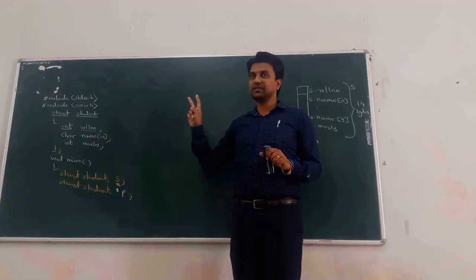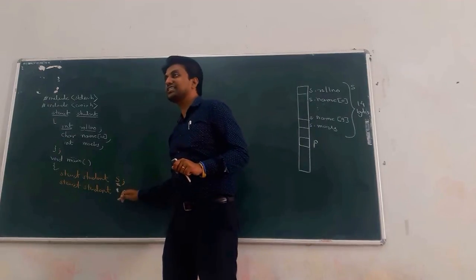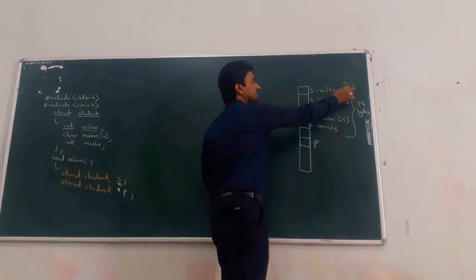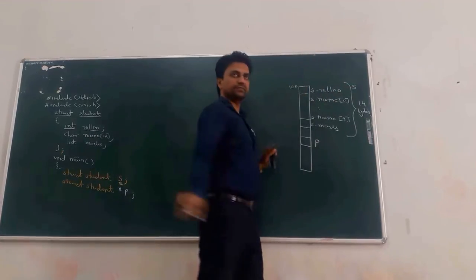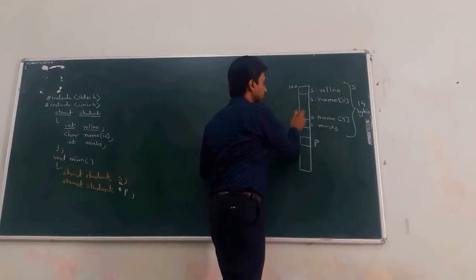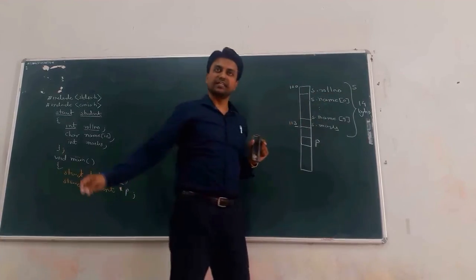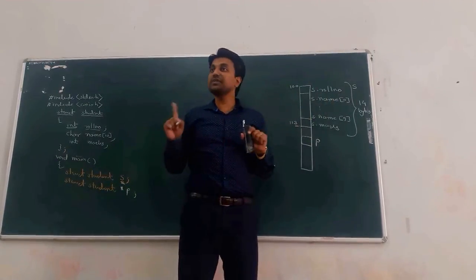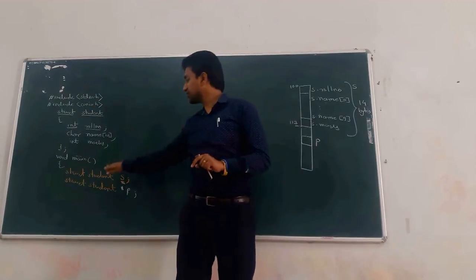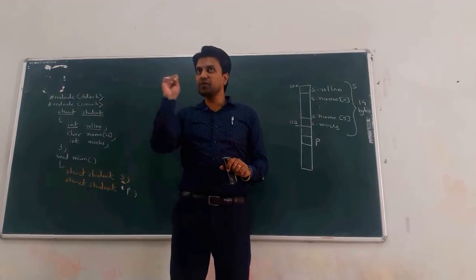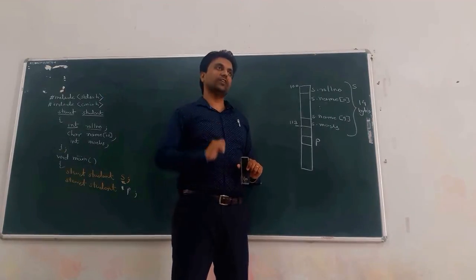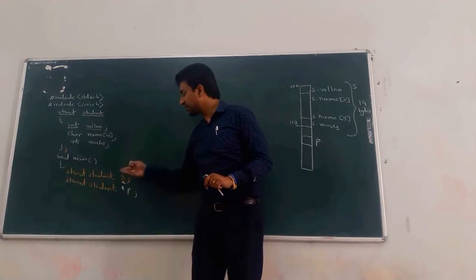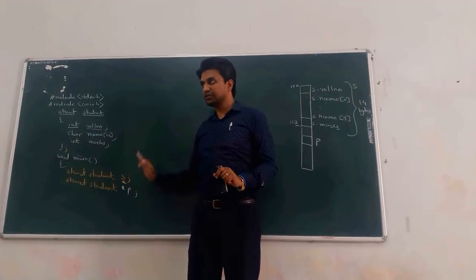Only 2 bytes are reserved for P, because P stores the address of another structure's value variable. If S is a value variable with base address 100, the last address of S is 113, since 14 bytes are reserved. Just as an integer pointer stores the address of an integer variable, a structure pointer contains the address of another structure's value variable.